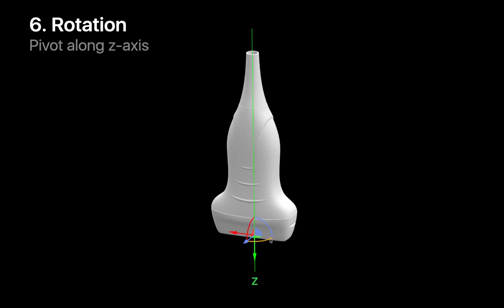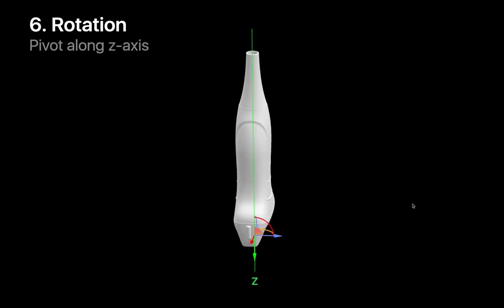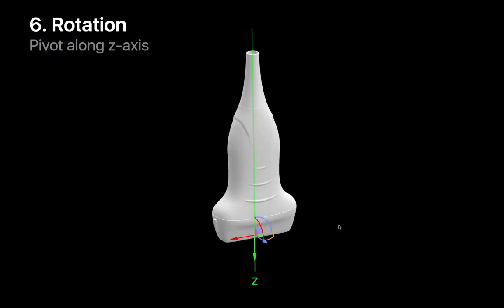And pivoting the probe along the axis of the transducer cable, either clockwise or counterclockwise, is called rotation.